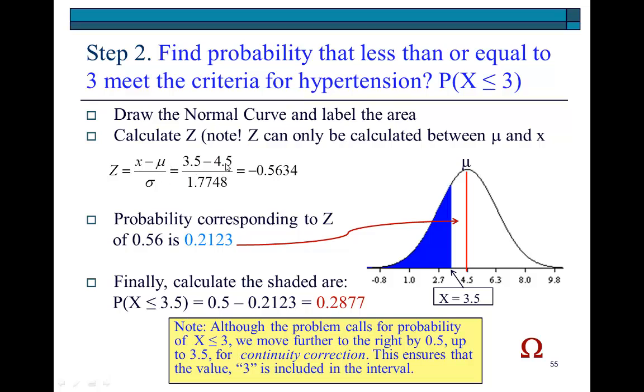And so, it's giving you the space. So, we're going to have to take this number of 0.2123, subtract it from 0.5, the total area on the one side of the curve. And the result is 0.2877. And if you want to use the website also to verify this, you could do so as well.